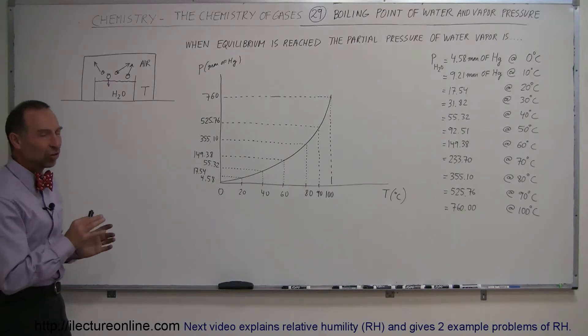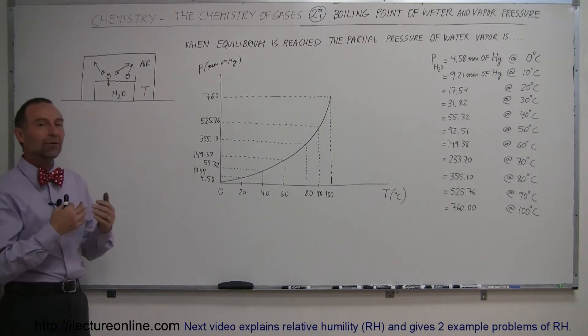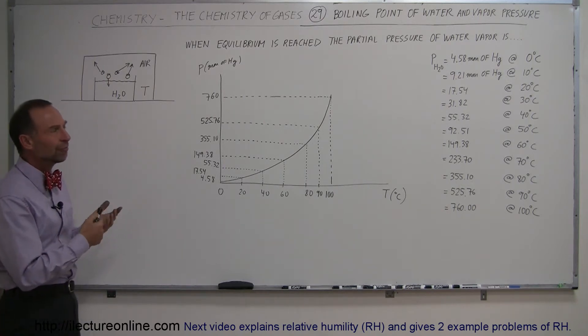Now we're going to take a look at the relationship between the boiling point of water and the partial pressure of moisture in the air we call vapor pressure.